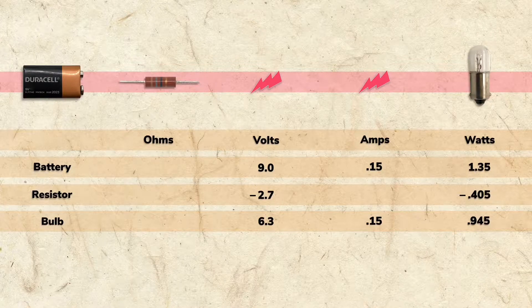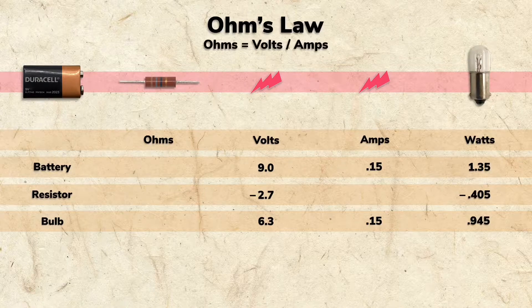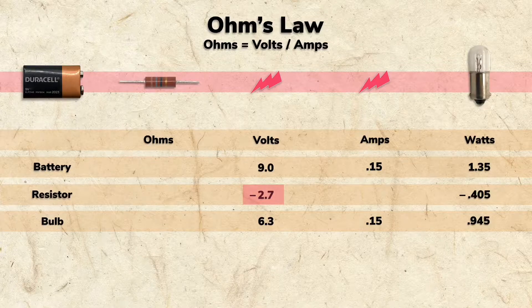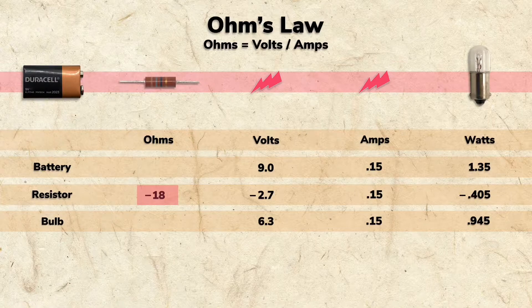To calculate how many ohms of resistance is needed, we turn to Ohm's law, which again states that ohms equals volts divided by amps. So, if we take the 2.7 volts we need to draw and divide it by the 0.15 amps the bulb draws, we find that we need to add 18 ohms of resistance. And that's just what an 18 ohm resistor does.